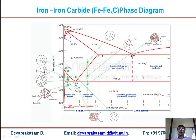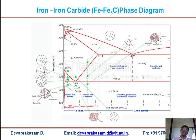As mechanical, civil, or any engineer, you will deal with iron in your profession. You should be aware of this phase diagram because iron, steel, and cast iron are used in many engineering applications. The composition and the kind of cooling will change the mechanical, electrical, and thermal properties of the system, varying with composition, temperature, and cooling rate.